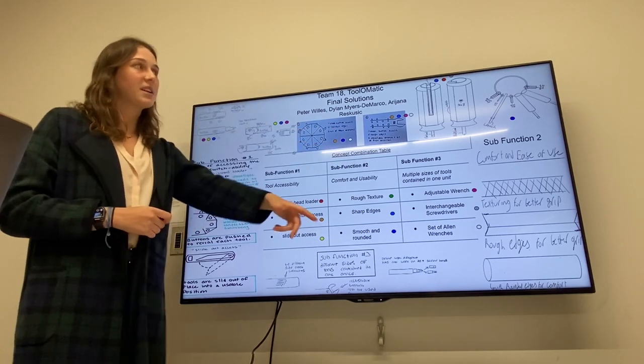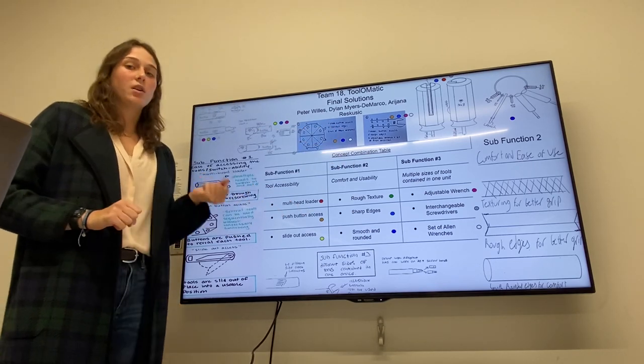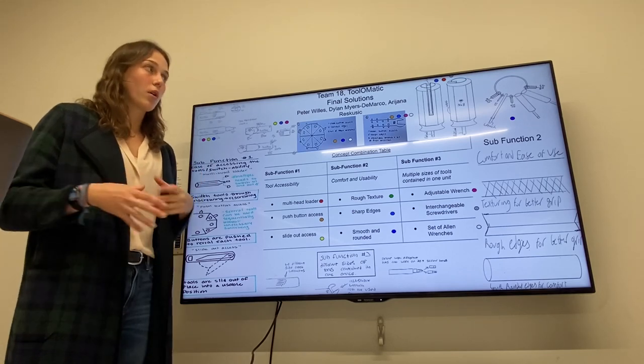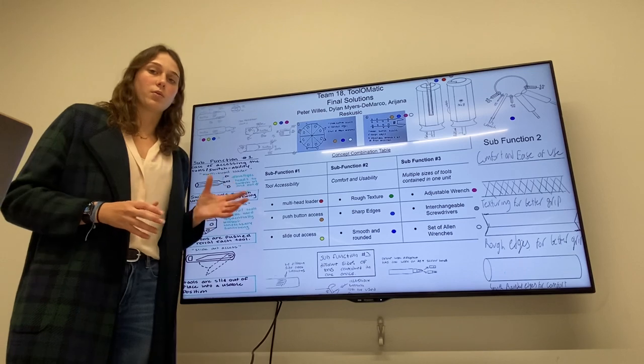His second idea was on a key ring, so it's a little bit bulkier but can hold more things, and has smooth and rounded edges.